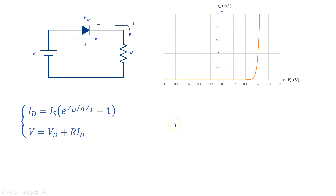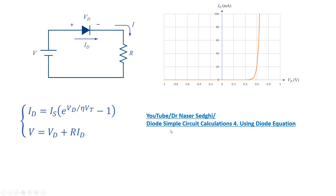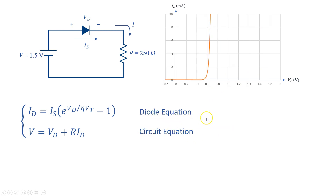In a previous video I have shown how to use numerical methods to calculate the current and voltage. These equations can be solved graphically as well. If we plot these equations on the same graph, the solution is simply where they meet — the intersection of them.